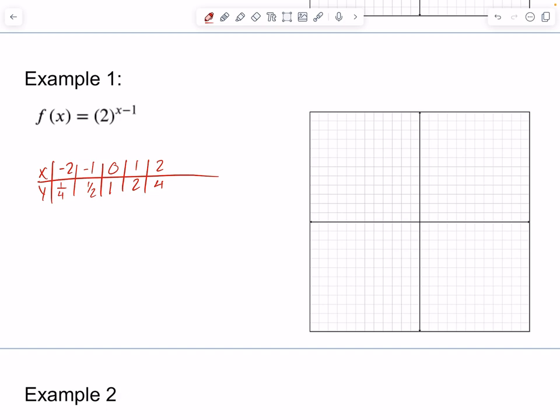So this is our original parent function. And we have this in our notes. But this is what this looks like here. We can go up to 8 for the next value if we need to. So our domain was all reals. Our range was boundaried by our horizontal asymptote. Our horizontal asymptote here was y equals 0.